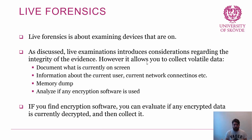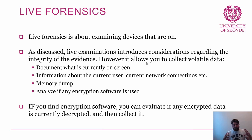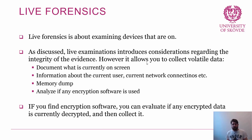Next, we can get a memory dump — basically dumping the information currently in the random access memory. This is good because it's information placed there since the last time the computer was started, so it's current and relevant. Also, when encrypted data must be read, it has to be decrypted, and the decrypted version is stored temporarily in memory. So there may be traces of decrypted versions of encrypted data in memory.